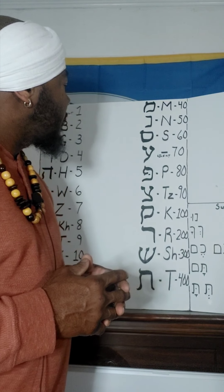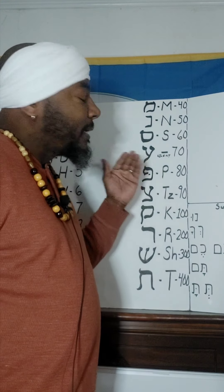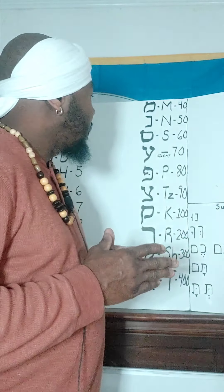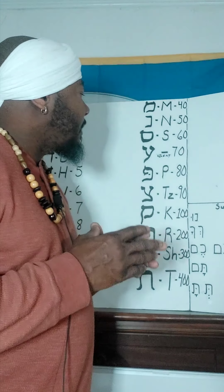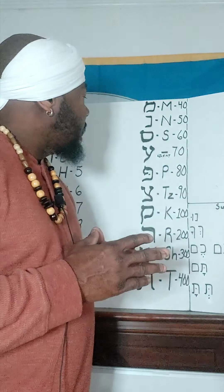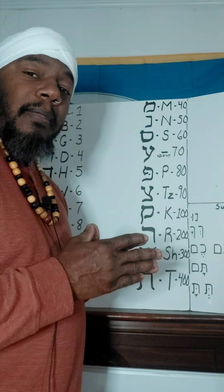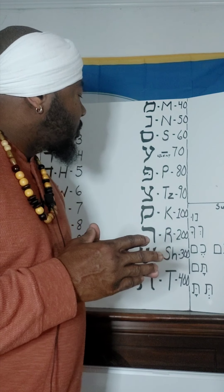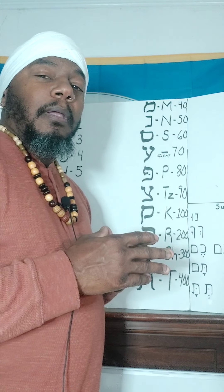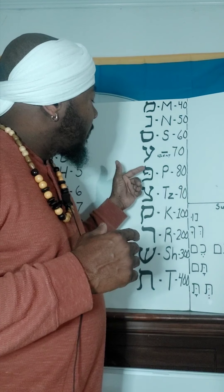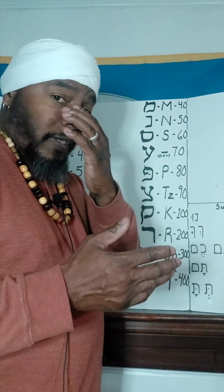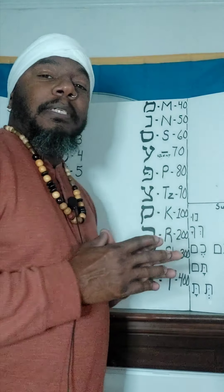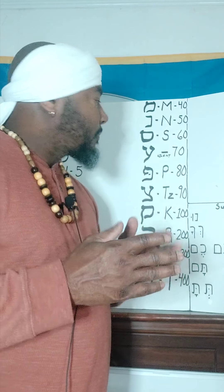The next letter is the Iron. It is silent, just like the Olive from the very beginning. The numeral equivalent to the Iron is seventy. The next letter is the Pay, or Fe. The English equivalent is the P and the F. The numeral equivalent is eighty.